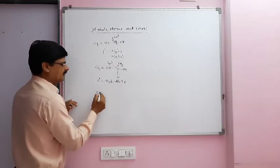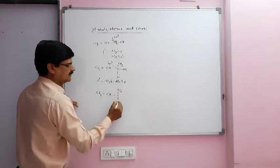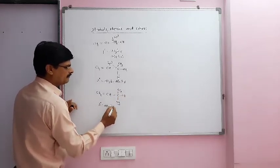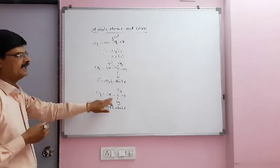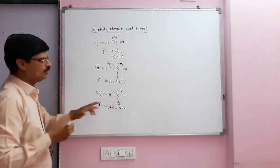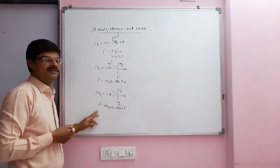If we have 3 degree allylic alcohol. 3 degree allylic alcohol. Even then, the carbon that contains OH group is of SP3 hybridization.